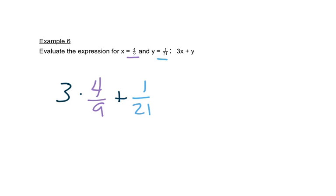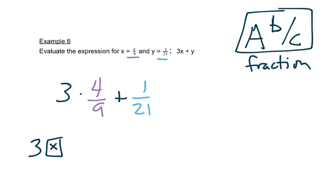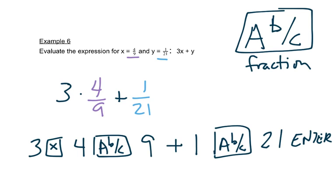On your calculator, if you have a TI-30 or a scientific calculator, there's usually a button I call the fraction button. Here's how we use it: type three, then times, then start the fraction by pressing four, then the fraction button, then nine. So it's the numerator, then the fraction button, then the denominator. Then press plus, then one, then the fraction button, then twenty-one, then your enter button. That should give you the answer.